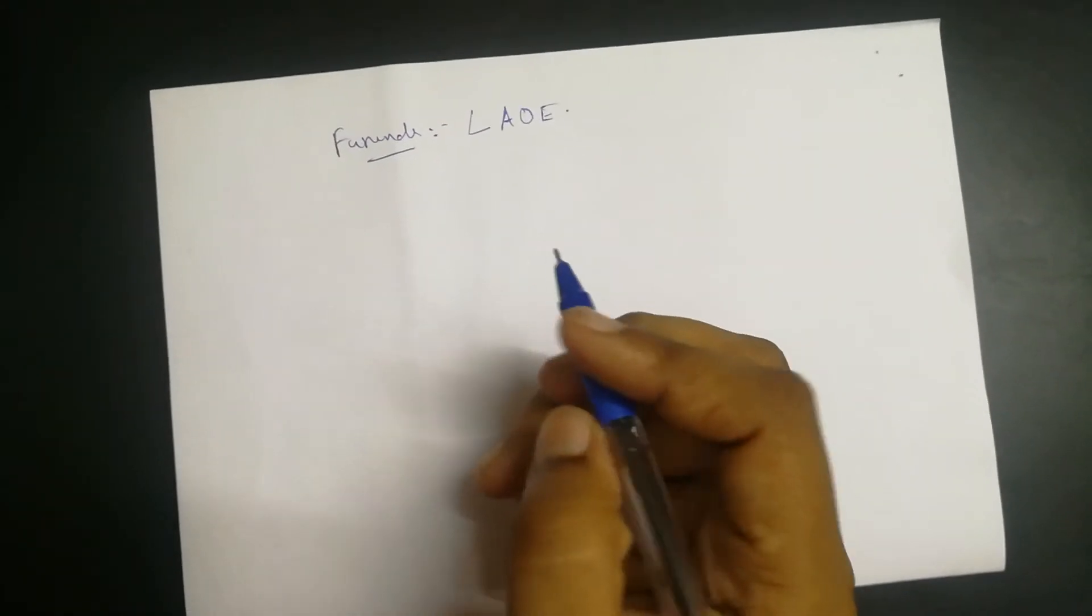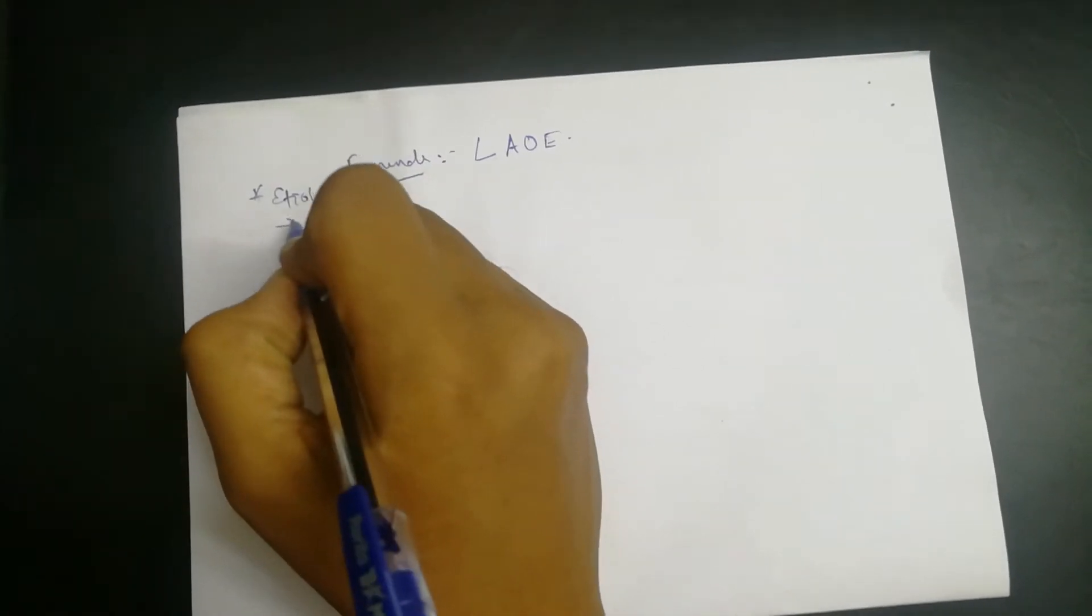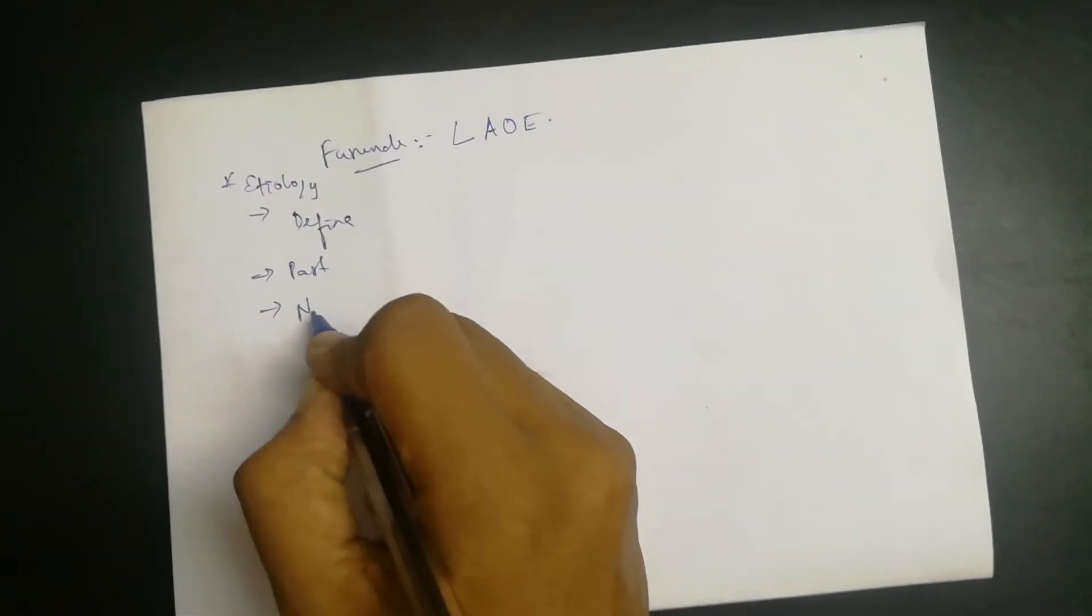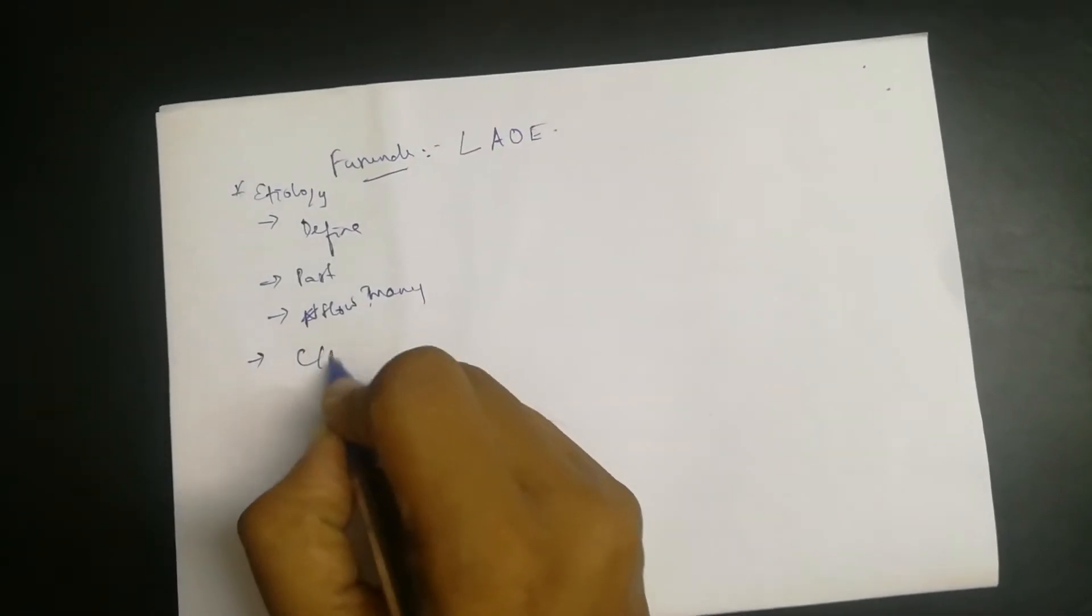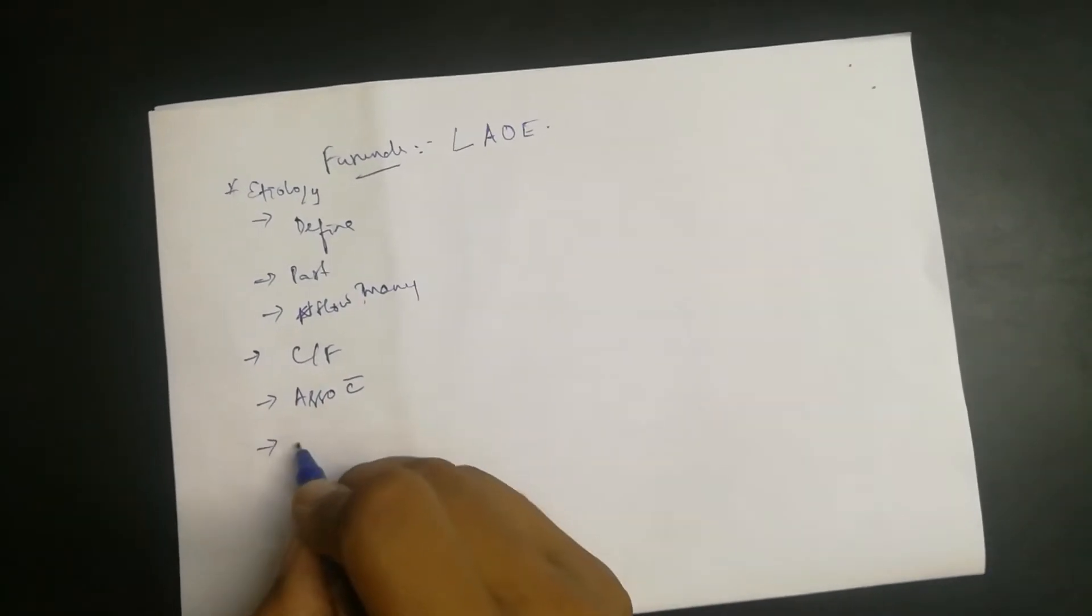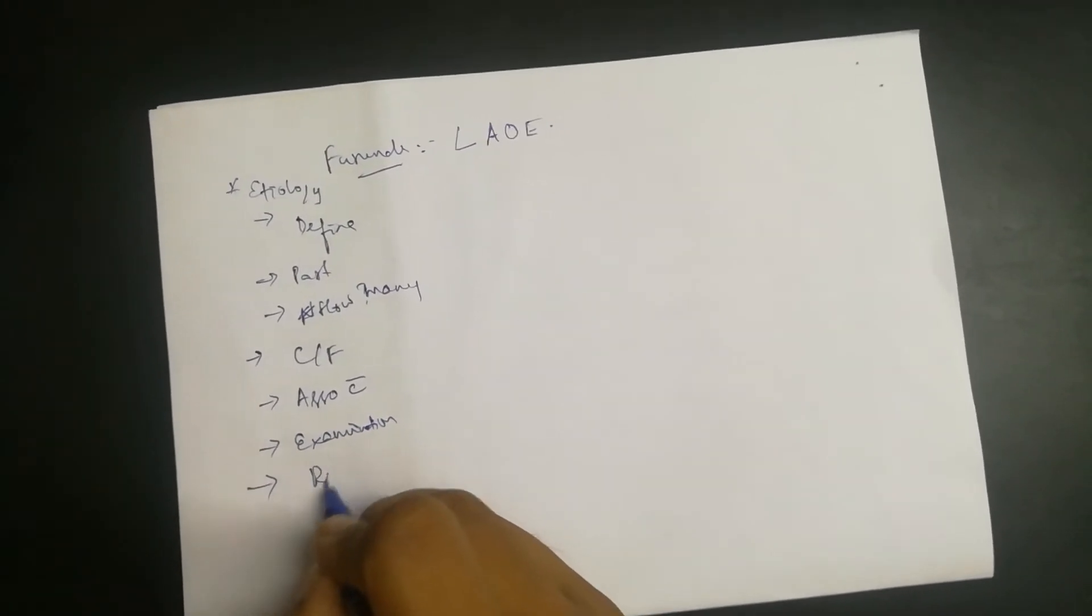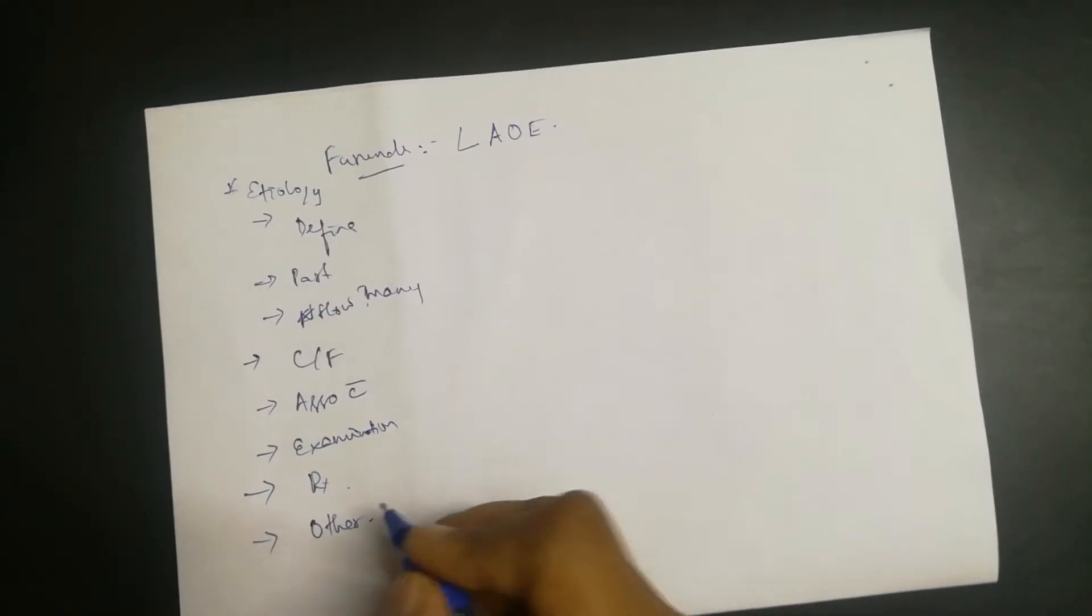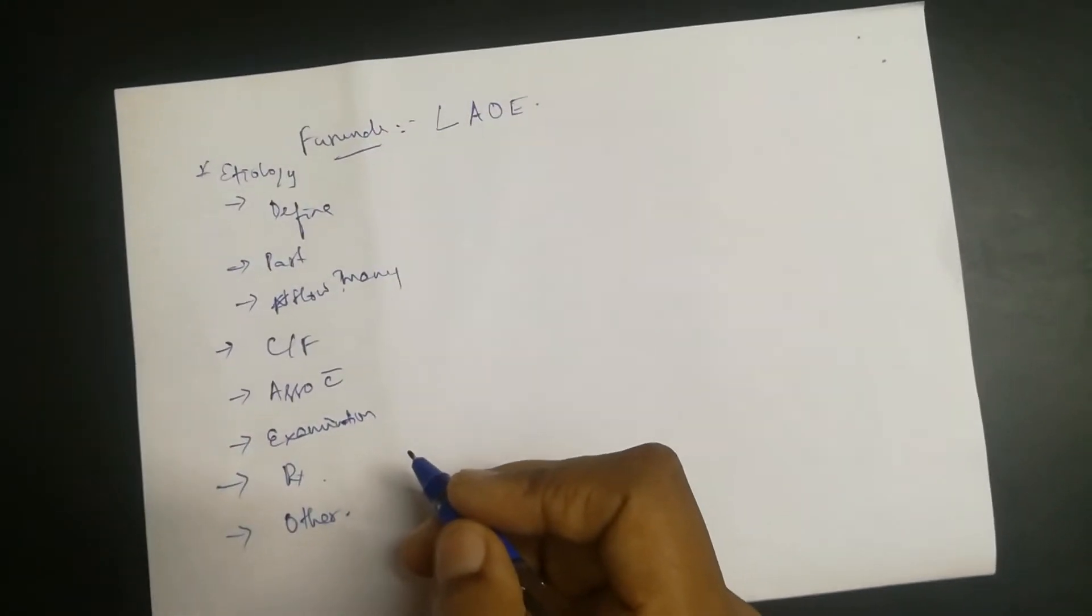The plan for today's video is to cover the etiology, definition, the part of ear which is involved, how many furuncles will occur, the clinical presentation and associated features, examination findings, treatment, and other similar conditions. So let's dive right into the topic: furunculosis.